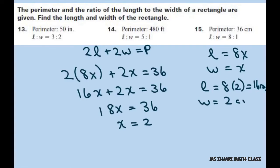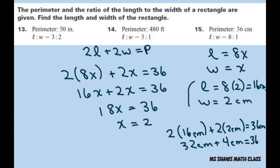Let's plug this one back in. We have 2 times 16 centimeters plus 2 times 2 centimeters should equal 36 centimeters. So we have 32 centimeters plus 4 centimeters, which does equal 36 centimeters.